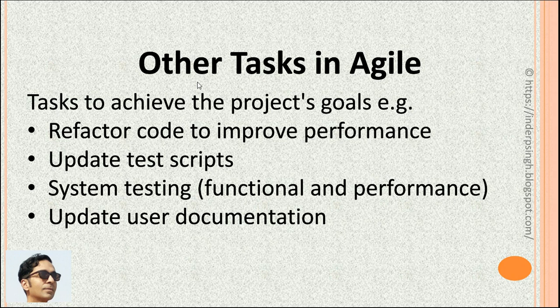What are the other tasks in Agile Scrum Product Backlog? They are tasks to achieve the project goals, and each task should provide value to the users. For example, refactor the code to improve performance, update the test scripts, system testing or QA testing focusing on functional testing and performance testing, or update user documentation.